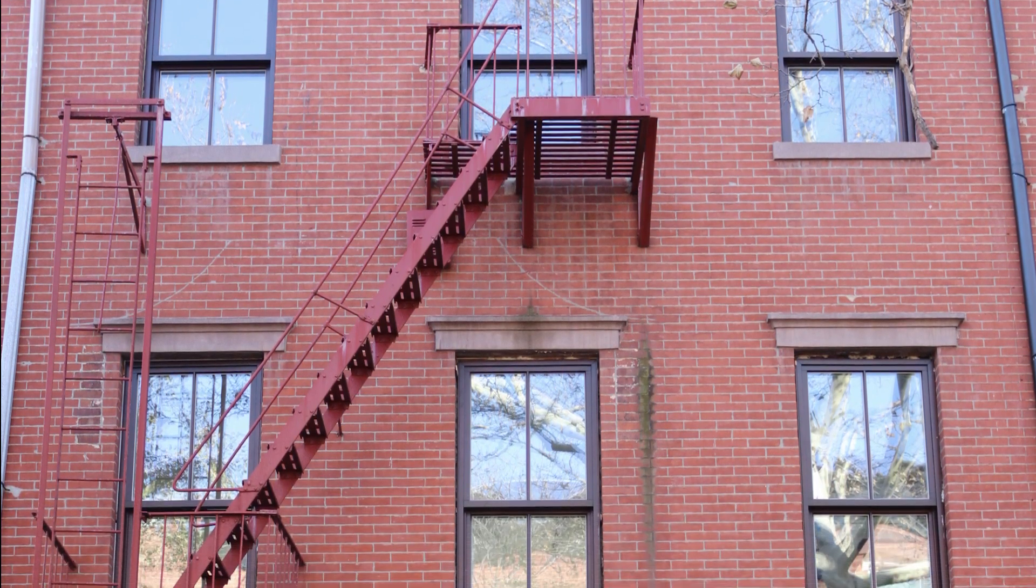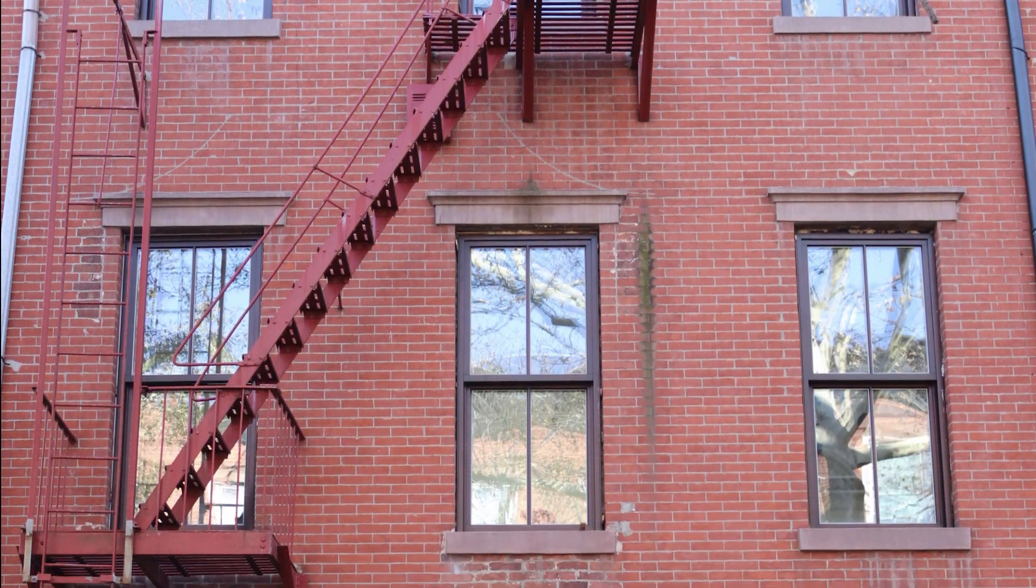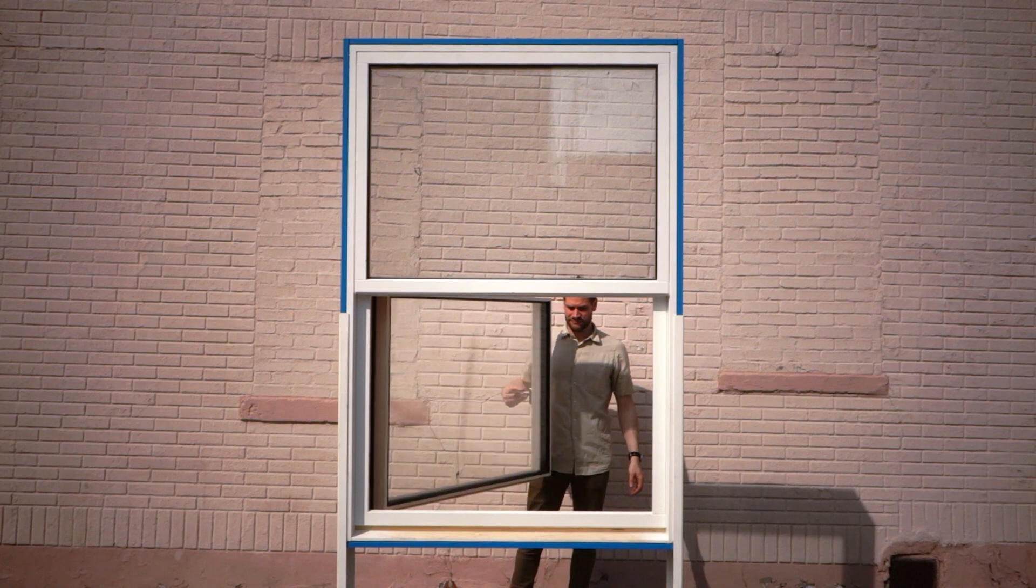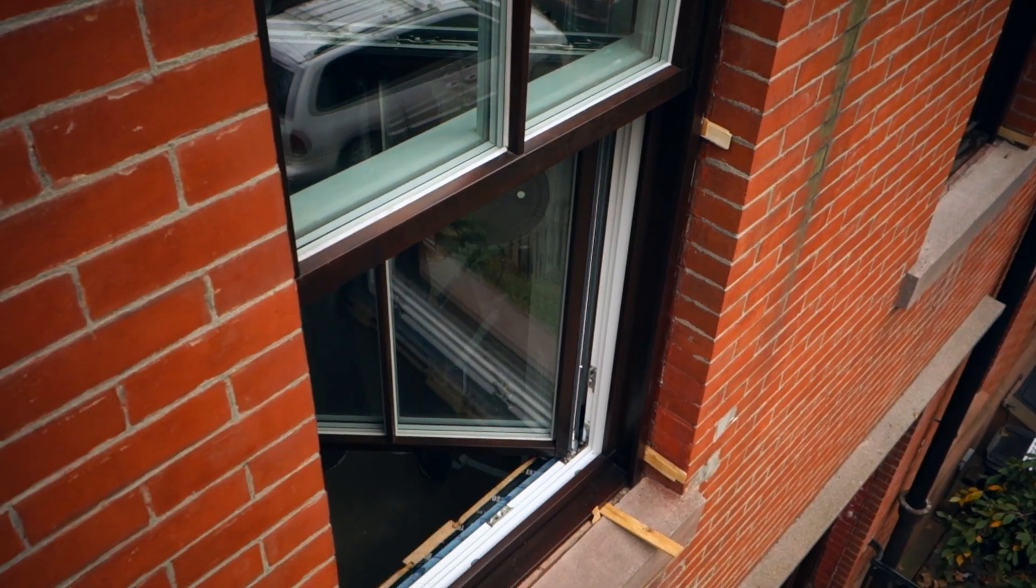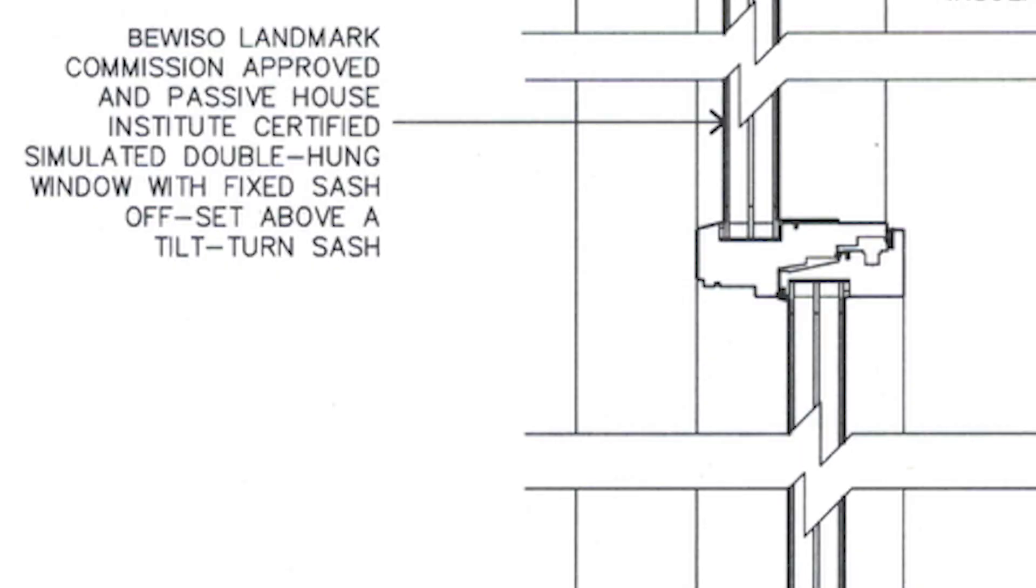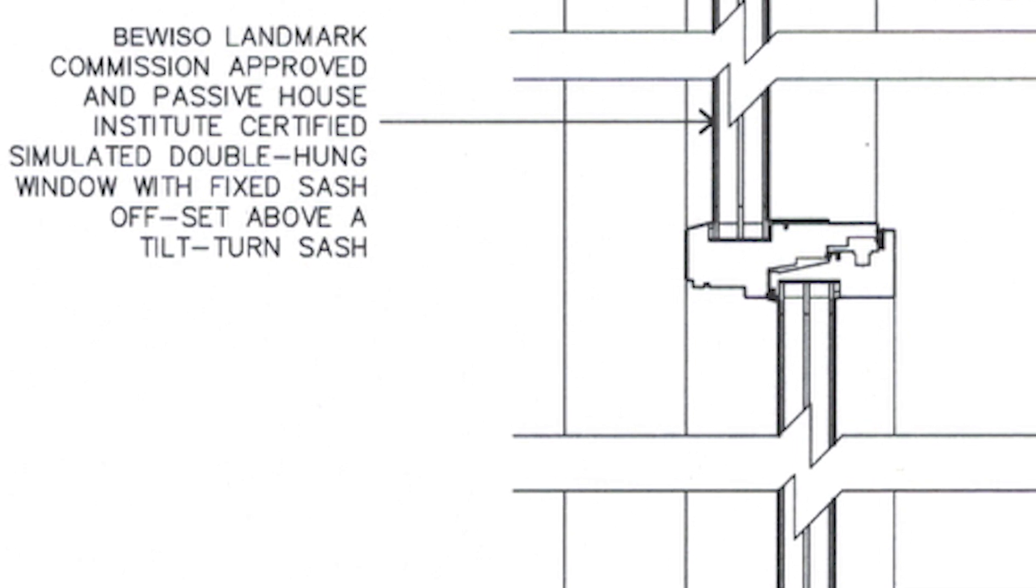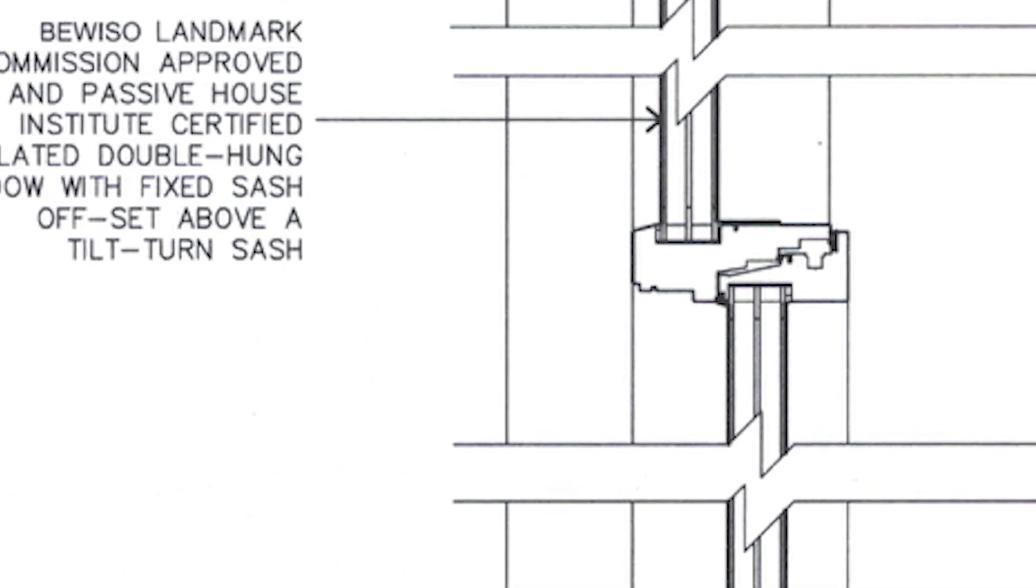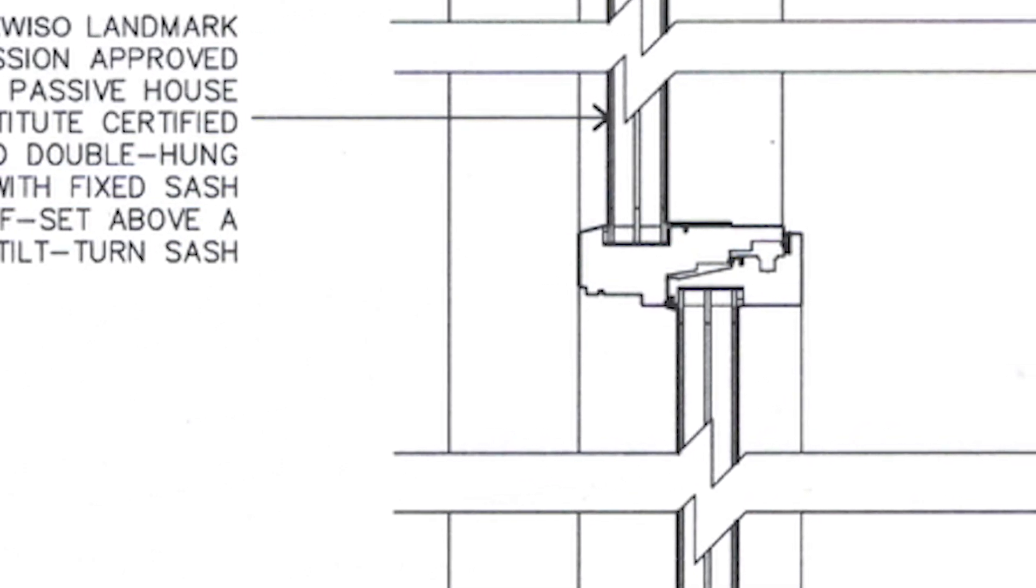So while unfortunately typical double hung windows don't measure up, it is fortunate that 475 provides simulated double hung windows that have been approved by New York City's Landmark Commission with thin profiles that are indistinguishable from their historic predecessors. These simulated double hung windows are the only ones certified by the Passive House Institute.